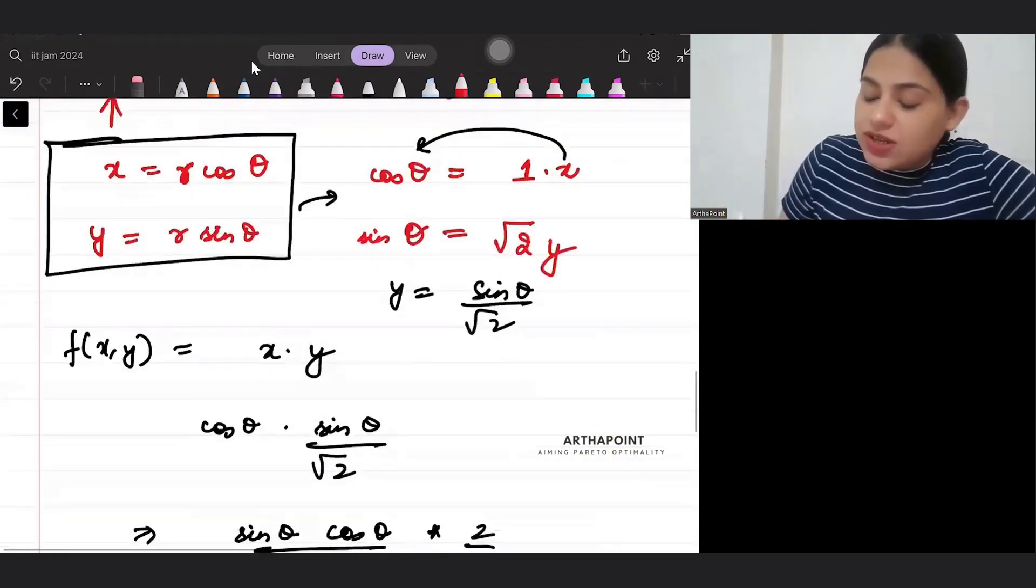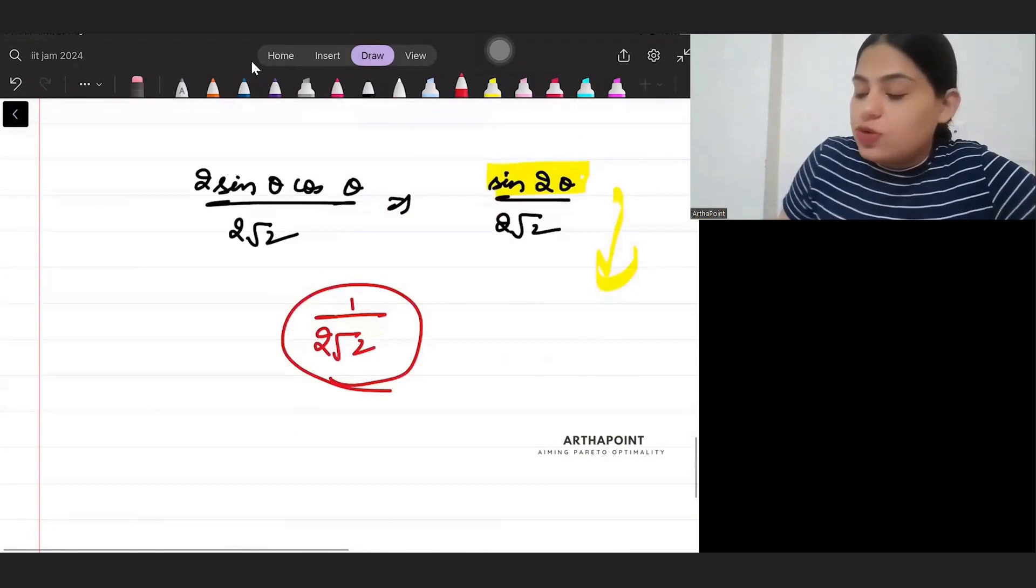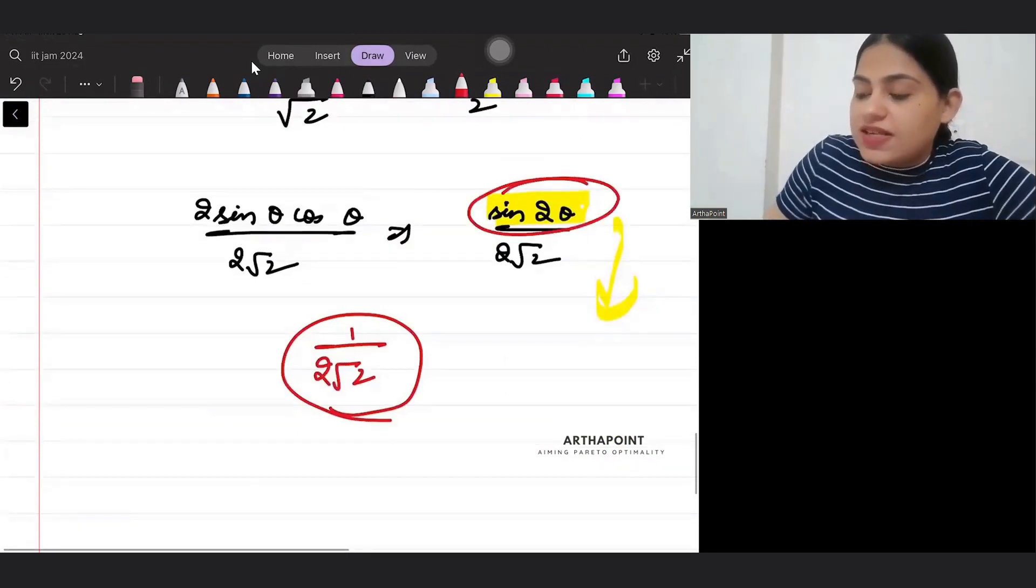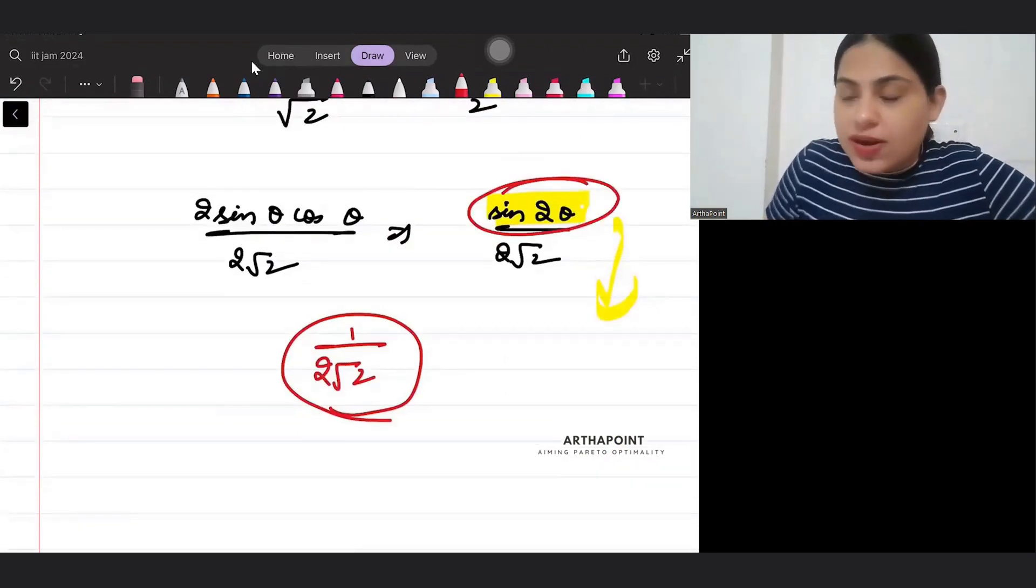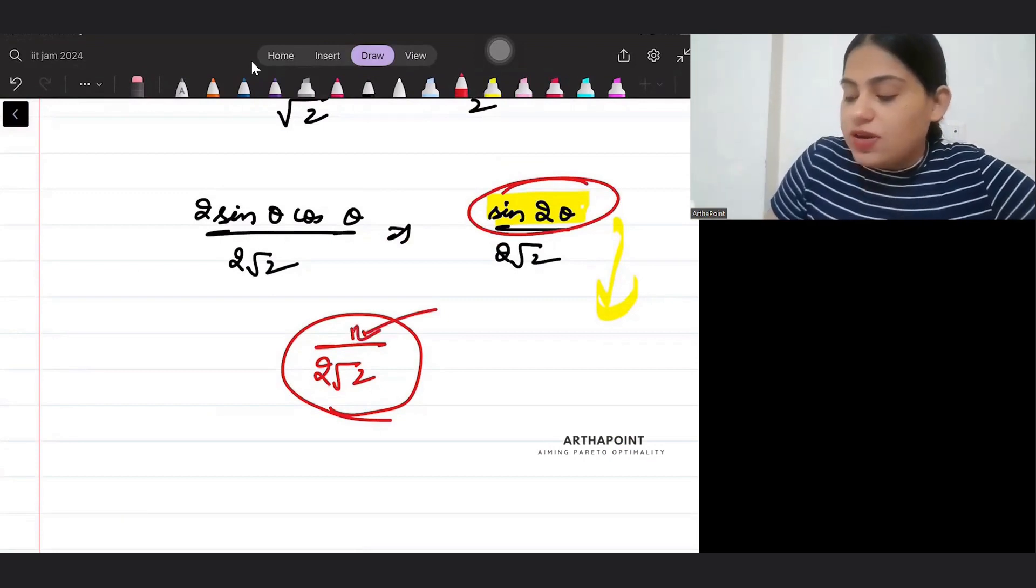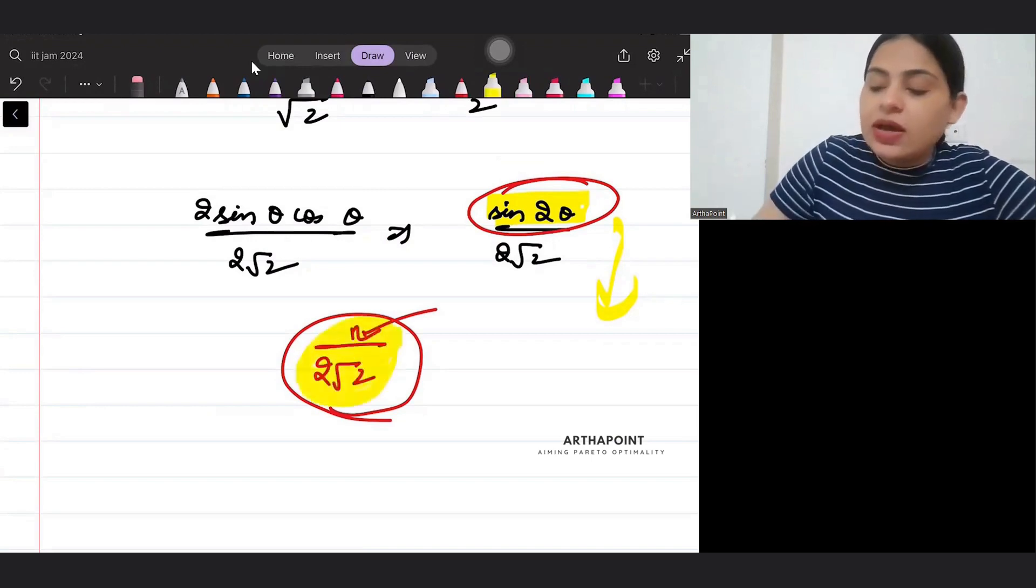So the answer can be found out using either method. You can do this method, that this function takes the maximum value. So this is maximum, sin can be between 0 to 1, so the numerator 1 ho gaya, maximum value is 1. And denominator me 2 root 2 hai, so xy ka value 1 by 2 root 2. That's the maximum value it can take.